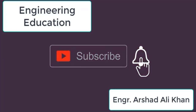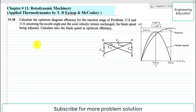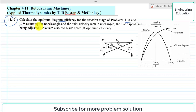Welcome to Engineering Education. In this lecture we are going to solve Problem 11.10, Chapter 11, Turbodynamic Machinery, from the book Applied Thermodynamics by McConkey. The problem asks us to calculate the optimum diagram efficiency for the reaction stage of problems 11.8 and 11.9, assuming the nozzle angle and axial velocity remain unchanged, with blade speed being adjusted. We must also calculate the blade speed at optimum efficiency.